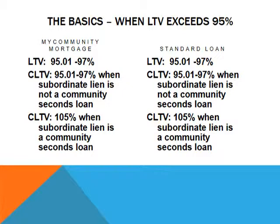On the first slide here, the basics: when the LTV exceeds 95%, we have two sides here — one for My Community Mortgage and one for the standard loan. As you can see from this slide, they pretty much are equal between the two of them.